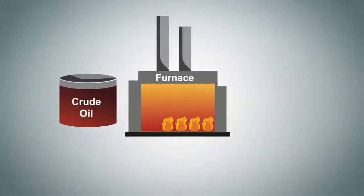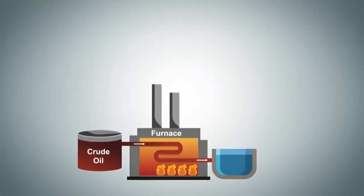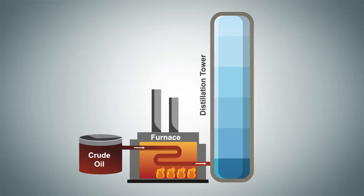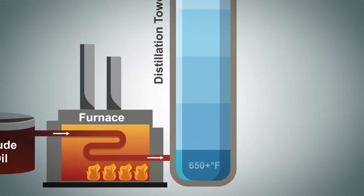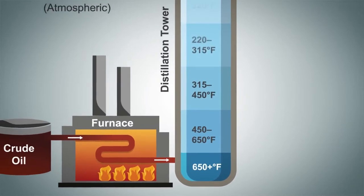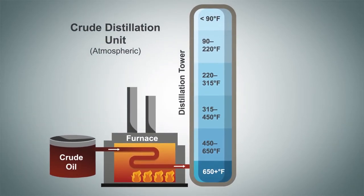From the storage tanks, crude oil is sent to a furnace for heating where the temperature can range between 650 and 670 degrees Fahrenheit. The heated crude is then sent to a distillation tower, where the pressure inside the tower is typically in the range of atmospheric pressure. Once the crude oil begins to heat and vaporize, this mixture of hydrocarbons will travel up the distillation tower, and as the vapor travels up, it is cooled to the point where the individual fractions begin to condense out at what is known as the dew point of that fraction.